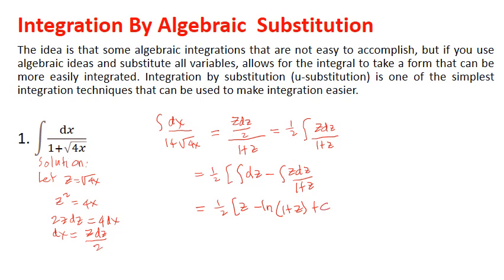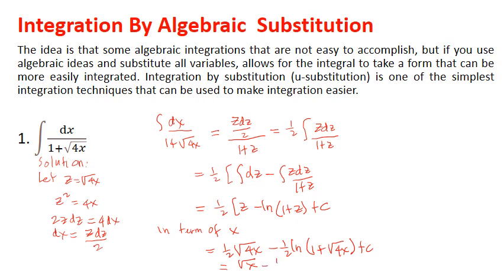Back-substituting in terms of x: the answer equals one half times square root of 4x minus one half times ln|1 plus square root of 4x| plus C, or equivalently, square root of x minus one half ln|1 plus 2 square root of x| plus C.